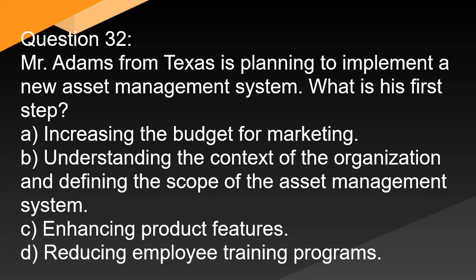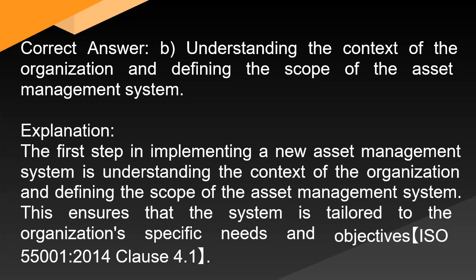Question 32. Mr. Adams from Texas is planning to implement a new asset management system. What is his first step? A. Increasing the budget for marketing. B. Understanding the context of the organization and defining the scope of the asset management system. C. Enhancing product features. D. Reducing employee training programs. Correct answer: B. Understanding the context of the organization and defining the scope of the asset management system.